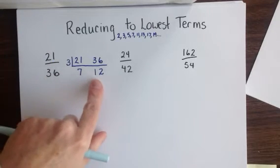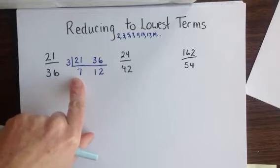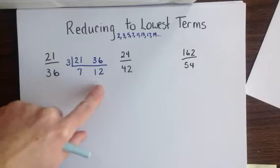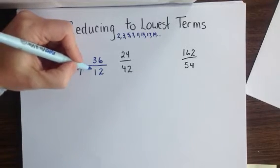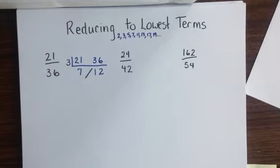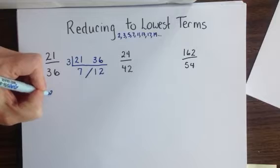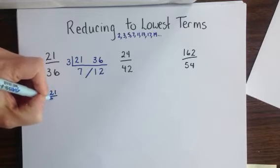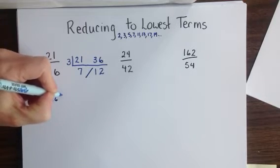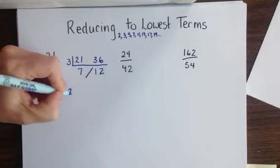This means that the remaining digits that we have left, the 7 and the 12, are our reduced fraction. So by putting a fraction bar between them, we have the reduced fraction. Therefore, 21 thirty-sixths is equal to 7 twelfths.